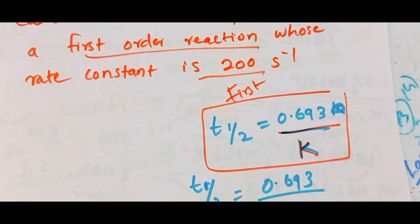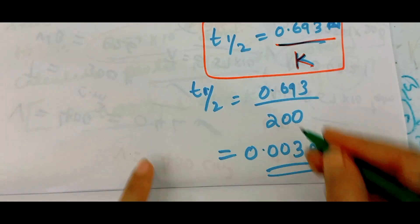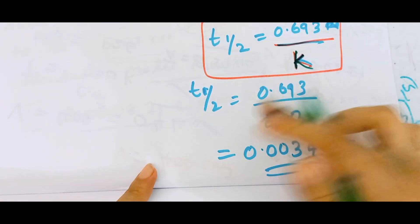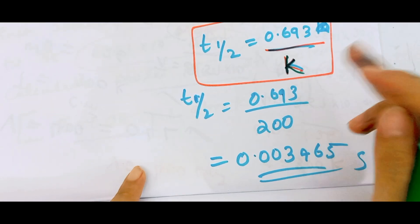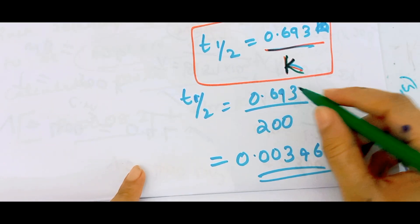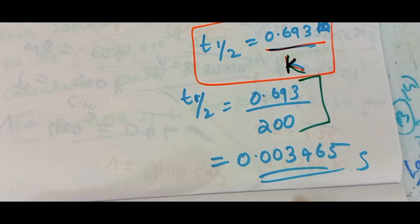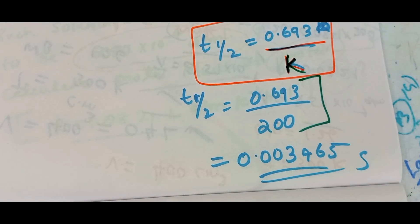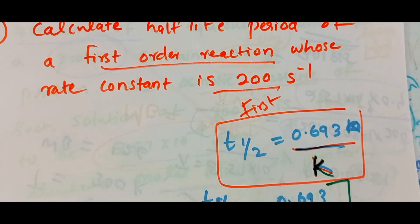Problem 5: First-order half-life is t½ = 0.693/k. The rate constant k = 200. So t½ = 0.693/200 = 0.003465 seconds.